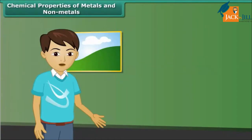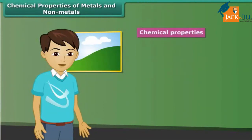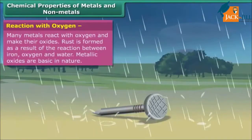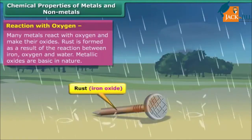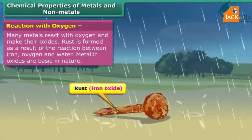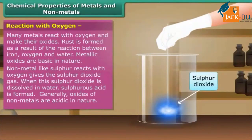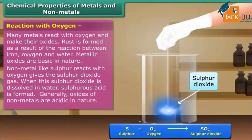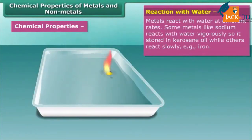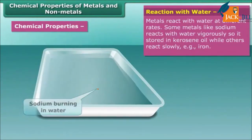Friends, after discussing the physical properties of metals and non-metals, let's know about their chemical properties. Metals like iron, copper, and magnesium react with oxygen and make their oxides — these oxides are basic in nature. Non-metals such as sulfur react with oxygen, giving sulfur dioxide gas. Oxides of non-metals are acidic in nature.